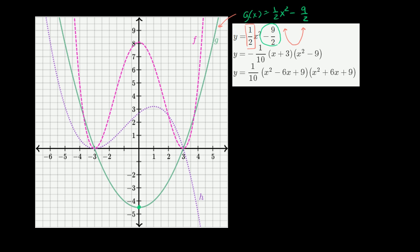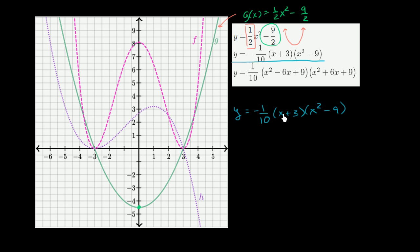Now let's look at the next two equations. Consider y equals negative 1 tenth times x plus 3 times x squared minus 9. Rather than multiplying everything out, let's think about what the highest degree term will look like. The highest degree term is going to be negative 1 tenth times x times x squared, giving us negative 1 tenth x to the third power.